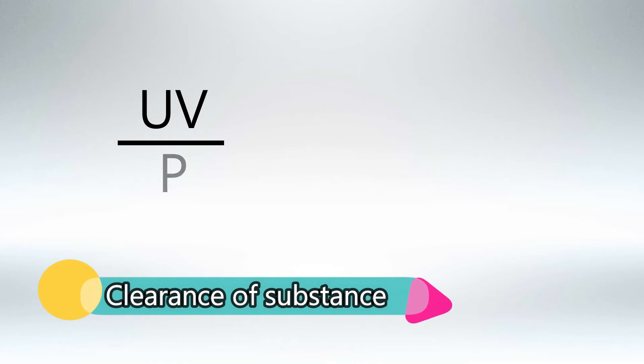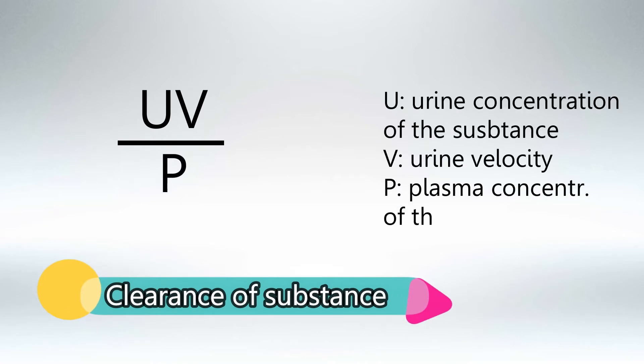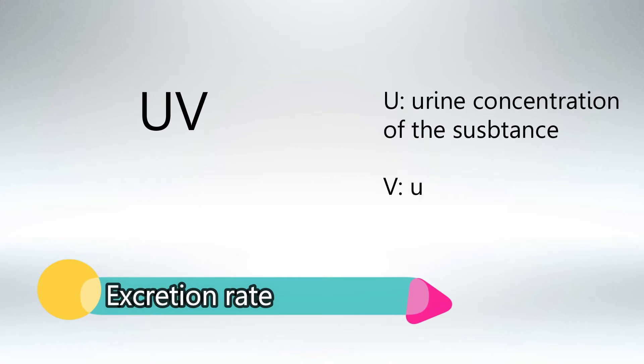The clearance of any substance is UV over P — that's the concentration of the substance in urine over the concentration of the substance in plasma, multiplied by urine velocity. And the excretion rate of any substance is UV: the urine concentration of the substance multiplied by urine velocity.